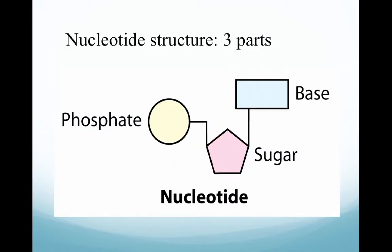A nucleotide is made up of three main parts: a phosphate group, a base, and a sugar. These three things together create a nucleotide. If you want to, just underline T-I-D-E, because we're going to get into some nomenclature a little bit later where we'll be talking about nucleosides, and nucleosides are different than nucleotides.